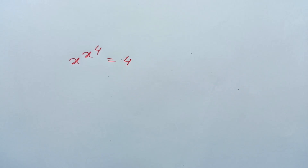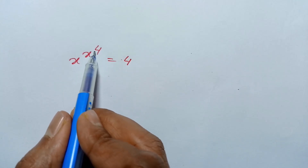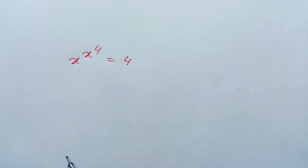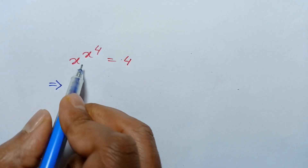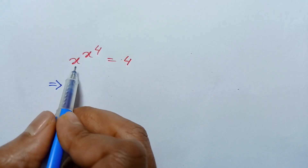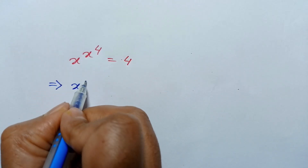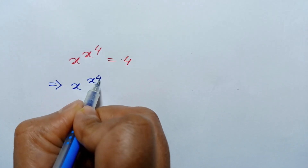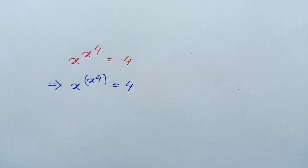Hi everyone. In this video I am going to show how to solve this equation: x to the power x to the power 4 is equal to 4, or we can write the left side as x to the power x to the power 4 is equal to 4.